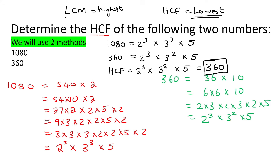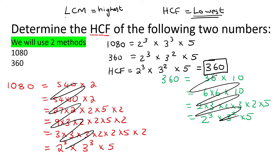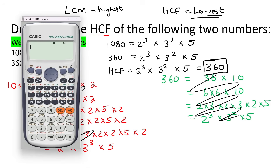If your teacher allows you to use a calculator, then you wouldn't have to do all of that manual work. There is a way the calculator gives you all of that in one step. You take the first number 1080, type it in, press equals, then press shift, then press FACT. It gives you 2 to the 3 times 3 to the 3 times 5. Then do the same with 360: equals, shift, FACT — and you get 2 to the 3, 3 to the 2, and 5. Then you do the exact same comparison.